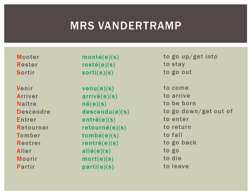This doesn't happen with avoir verbs, but it does happen with être verbs, so they're slightly more complicated. The A stands for rester, to stay. S is sortir, to go out. V is venir, to come. A is arriver, to arrive. N is naître, to be born. D is descendre, to go down or to get out of. I is entrer, to enter. A is retourner, to return. T is tomber, to fall. R is rentrer, to go back. A is aller, to go. M is mourir, to die. P is partir, to leave. If you can remember Mrs. Van der Tramp, hopefully you'll find it easy to remember which verbs use être.